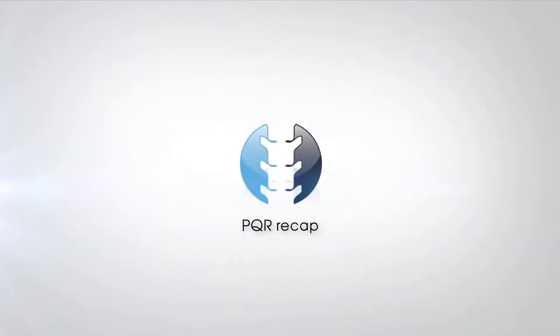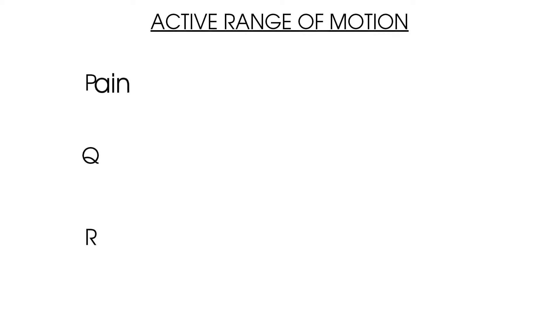When we're thinking about active range of motion testing, we need to consider three things: P, Q, and R — that stands for Pain, Quality, and Range. So as we have said, when testing active range of movement of any joint, we need to consider P for pain, Q for quality of movement, and R for range of movement.